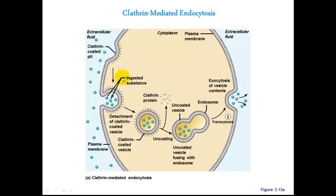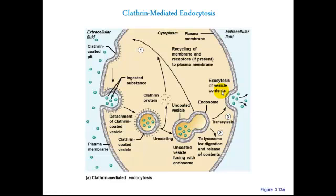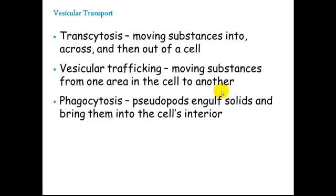In other cases, endocytosis is the beginning of passing a substance across the cell, called transcytosis — endocytosis, crossing, and then exocytosis, in which the substance is released on the other side. Transcytosis occurs especially when cells form a tight boundary, such as in epithelial tissue, but where substances still need to move across. We also have vesicular trafficking, where substances are moved from one area within a cell to another.